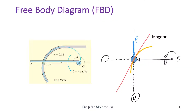Since the particle is moving downward, the friction force acts in the opposite direction of the motion along the tangent. So this is the friction force F_F. The normal force, on the other hand, is perpendicular to the tangent — that is the normal force.